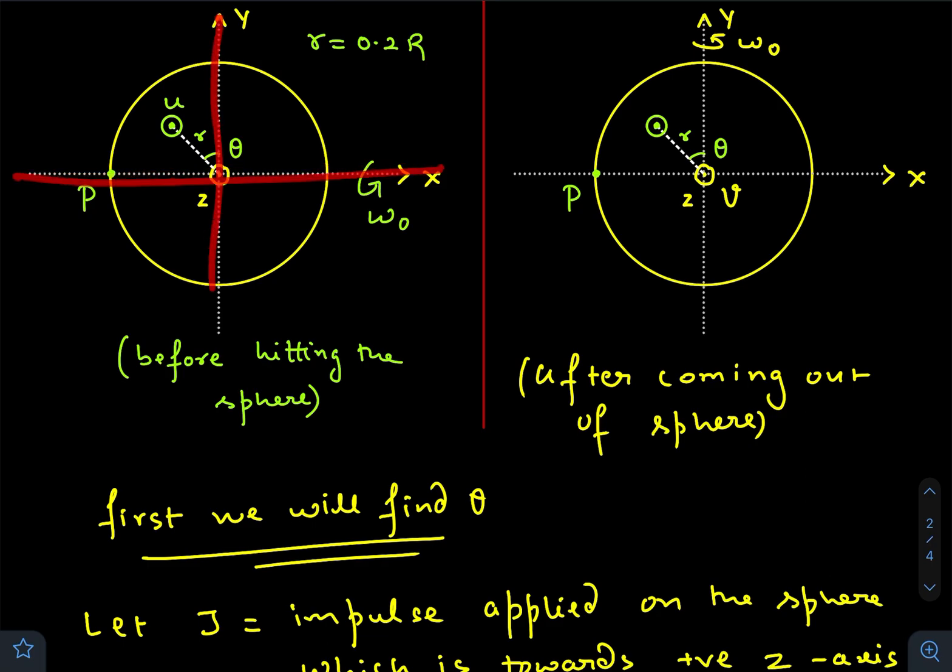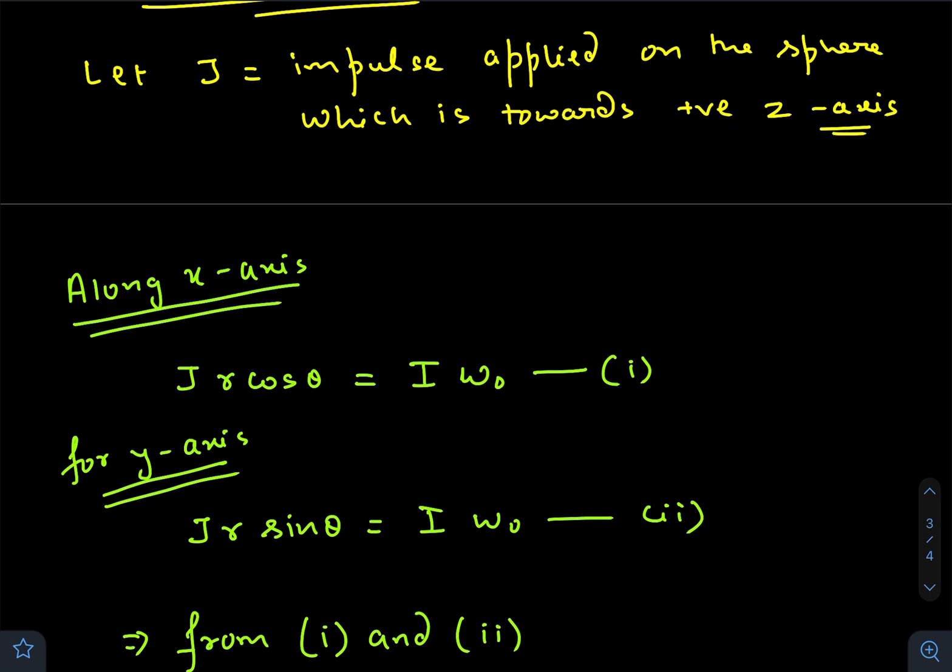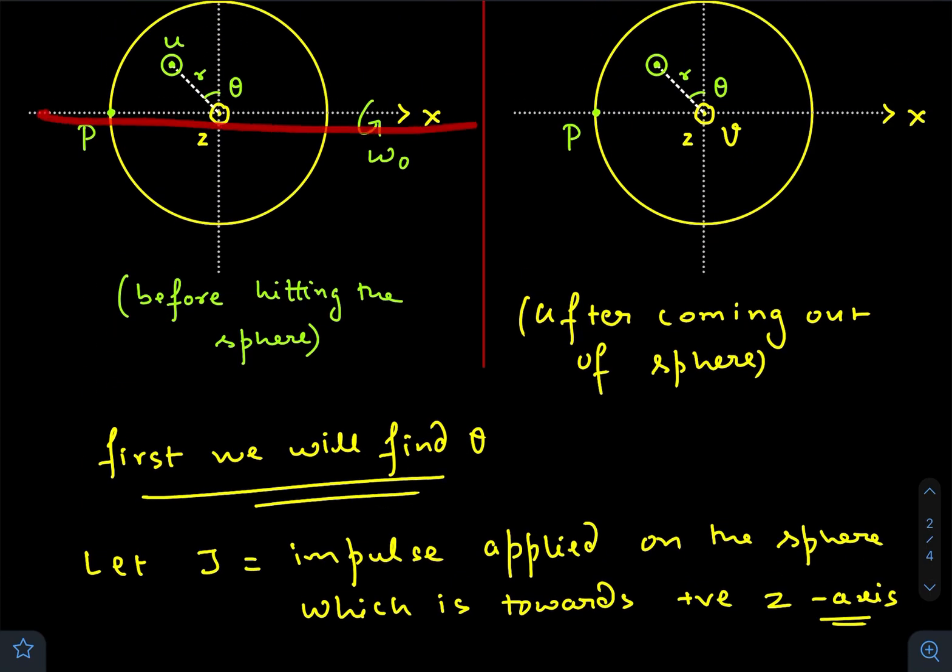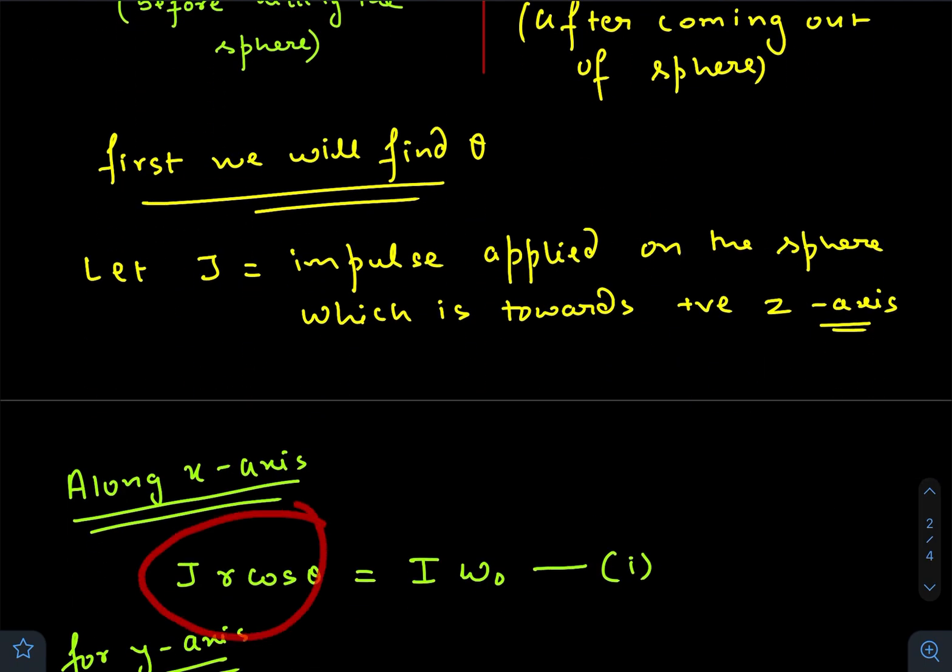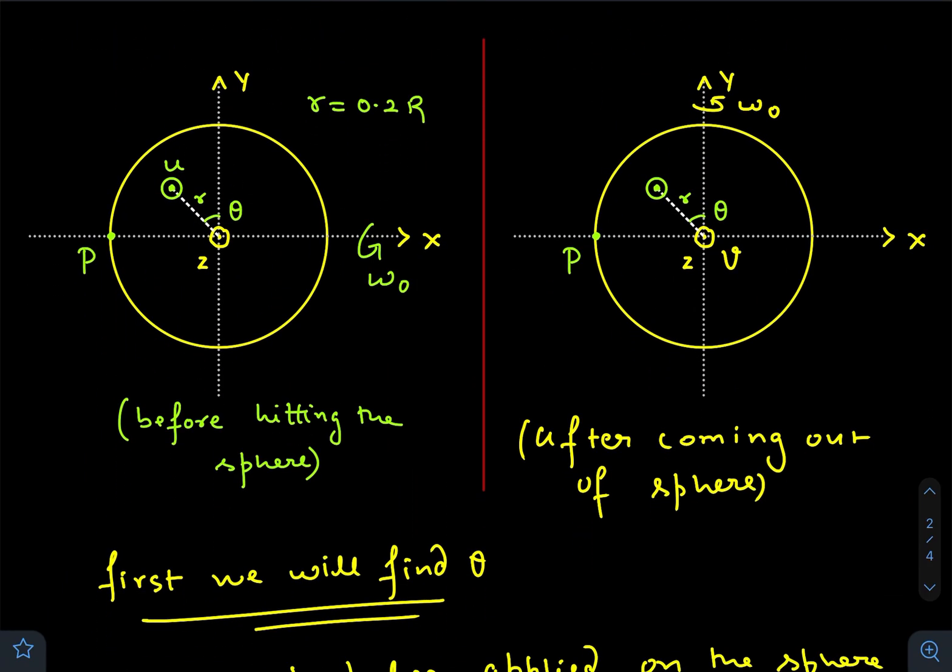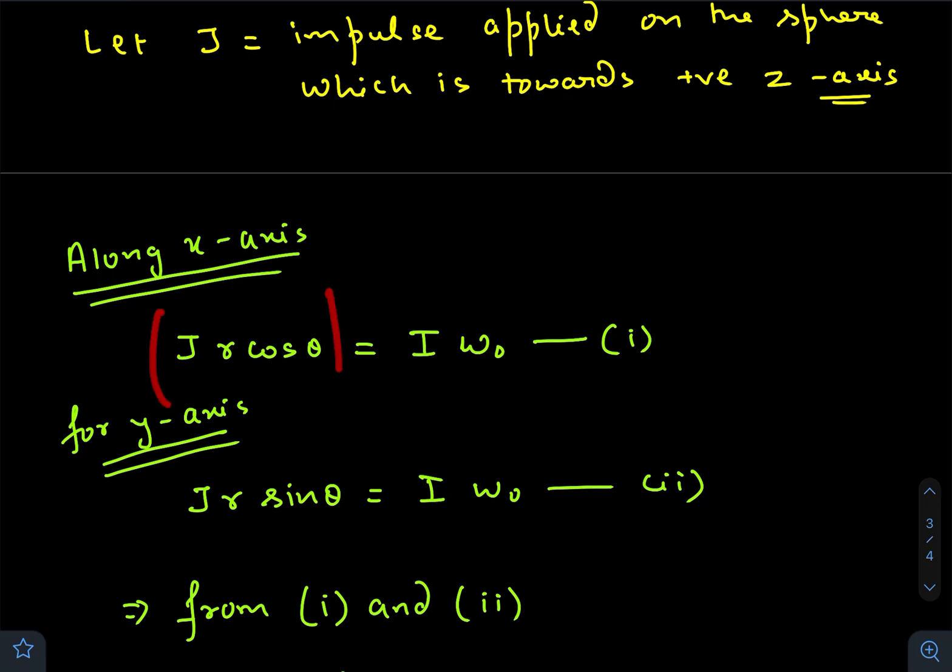First, let us see along the x-axis. Angular impulse with respect to the x-axis is J times the perpendicular distance, that is r cos θ. So J times r cos θ equals final angular momentum minus initial angular momentum, which is along the x-axis, which is zero minus I ω₀. I have taken the magnitudes here only.